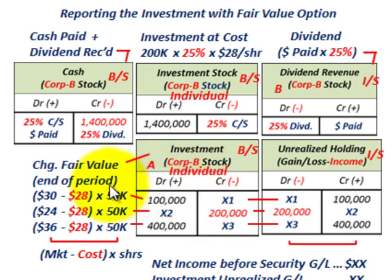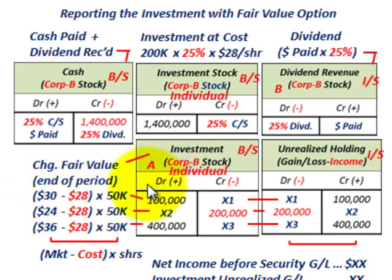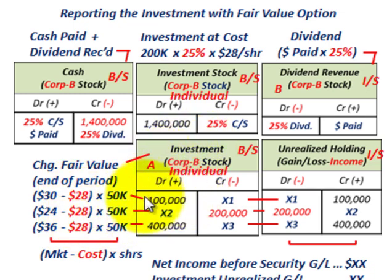Once you've selected the fair value option, you keep tracking the investment each reporting period and must continue using it regardless. Until you sell that security you keep using it. You always go back to your cost — whatever the cost basis was when you originally purchased the security — compare it to the market value, and record the increase or decrease in your investment account.